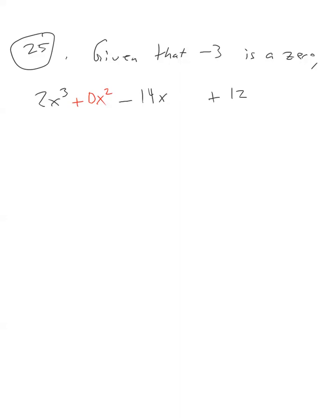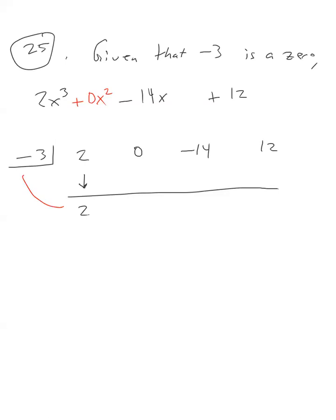To perform synthetic division, write the given zero, negative 3, to the left, then write the coefficients: 2, 0, negative 14, and positive 12. Bring down the 2, multiply to get negative 6, add to get negative 6, continue multiplying and adding through all the coefficients, and the remainder is 0.